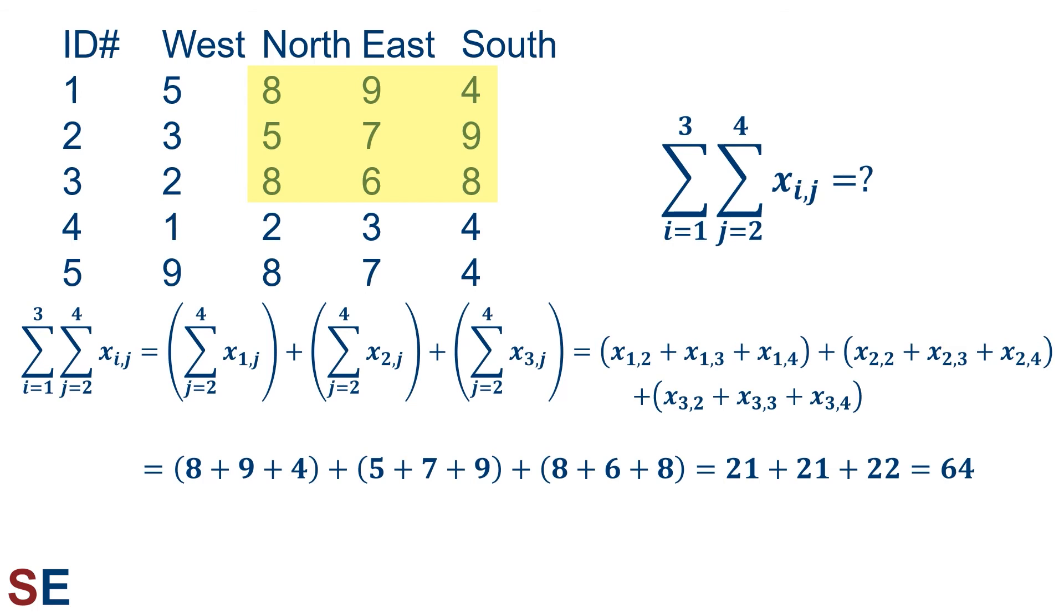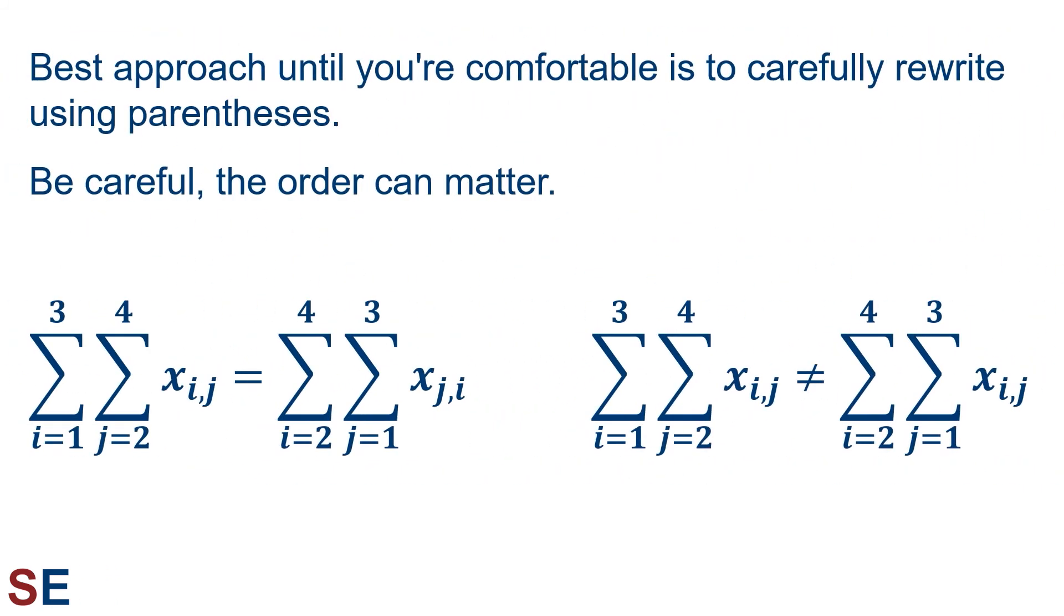The usefulness of this nomenclature comes from being able to write a simple equation like this instead of having to try to verbally describe something like add up the first three numbers from columns 2 through 4. As I mentioned, the best approach until you're comfortable with this notation is to carefully rewrite the summations using parentheses. And you have to be careful because the order can matter and double summations that look very similar are not necessarily identical. For example, the left pair of double summations are the same because the i's and j's have been swapped in both the subscripts and in the summation symbols. But the right pair of double summations are not the same. If you imagine what the rectangles of data look like for those cases, you can see that they're not the same.